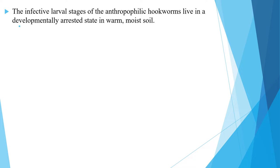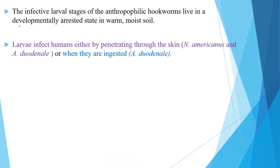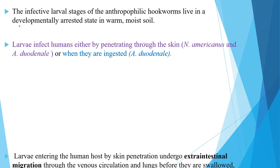The infective larval stages of the anthropophilic hookworms live in a developmentally arrested state in warm and moist soil. Larvae infect humans either by penetrating through the skin, or when they are ingested, as in the case of Ancylostoma duodenale.